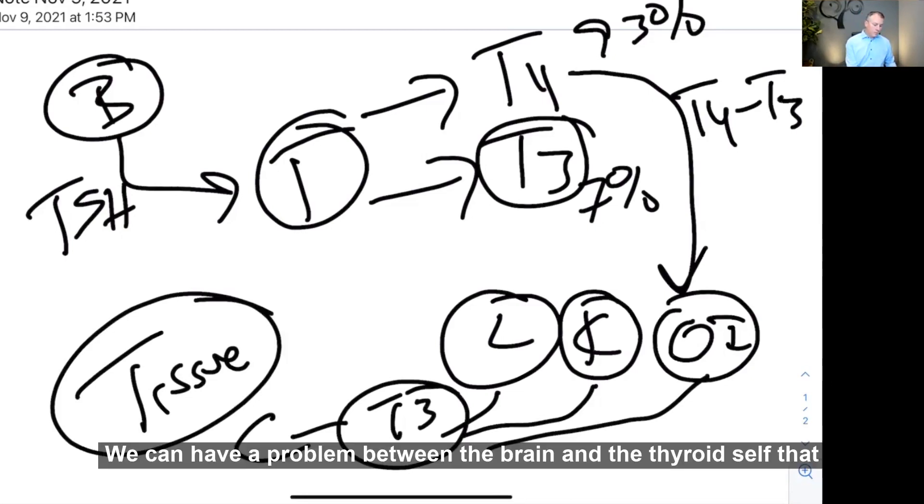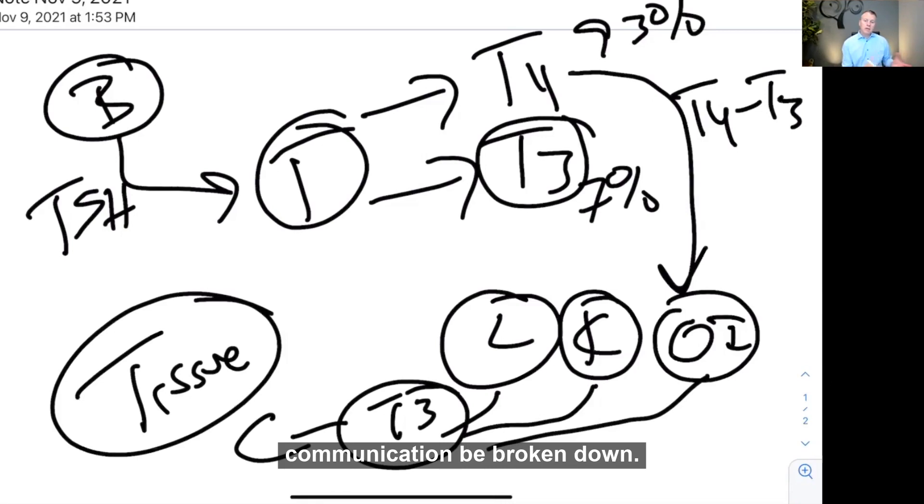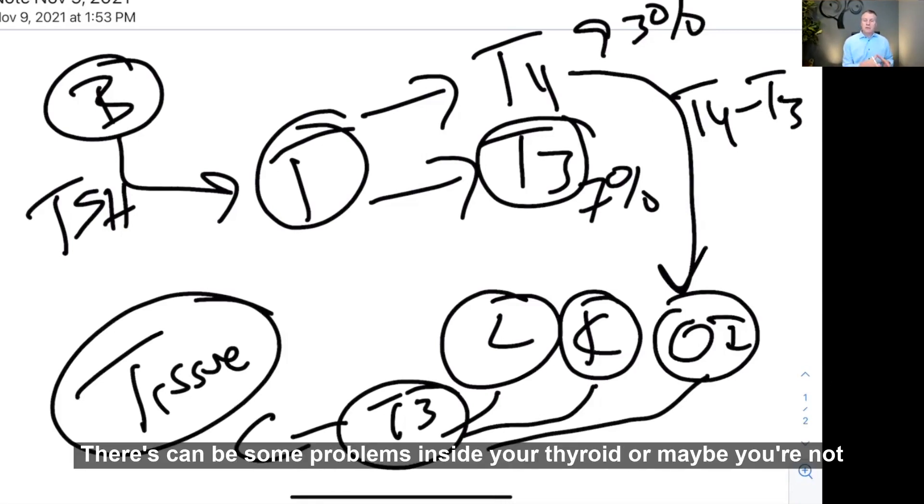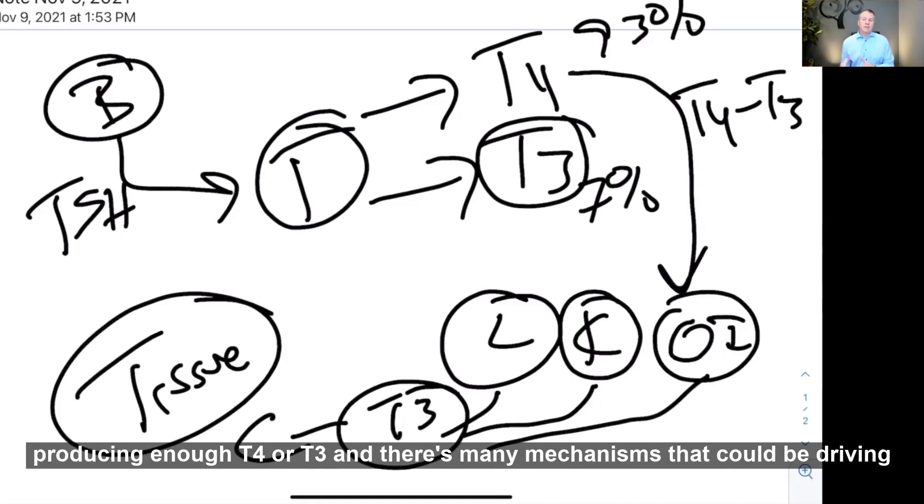We can have a problem between the brain and the thyroid itself, that communication can be broken down. And then there's a possibility there could be some problems inside your thyroid where maybe you're not producing enough T4 or T3, and there's many mechanisms that could be driving that.